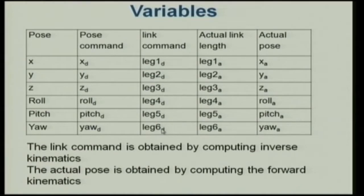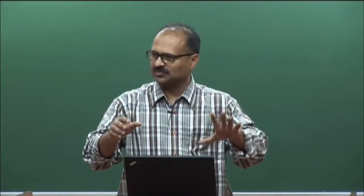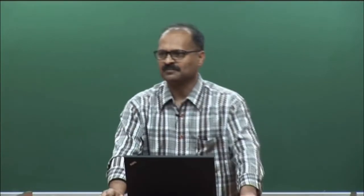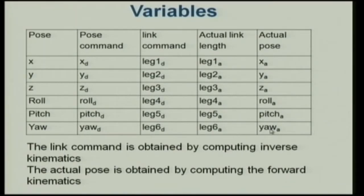Even without those issues, there is position error, actuator torque limitation, speed limitation, and force limitations. At any time you will not get the desired length exactly — you get the actual length. Corresponding to the actual leg lengths, you can do forward kinematics and find out the actual pose of the platform.